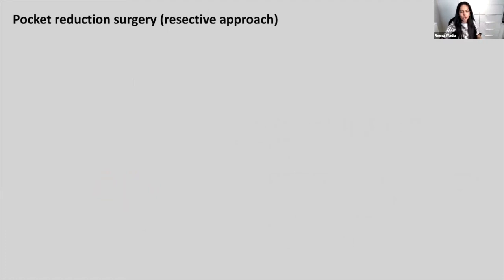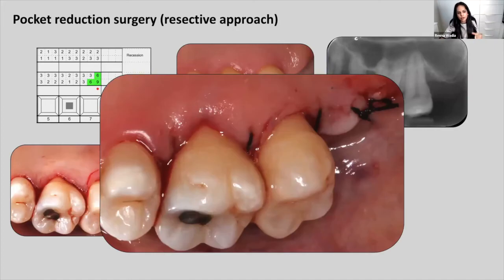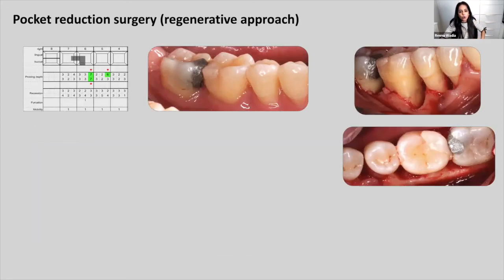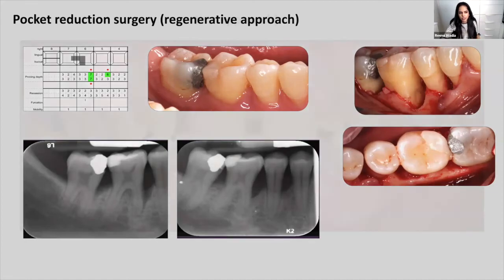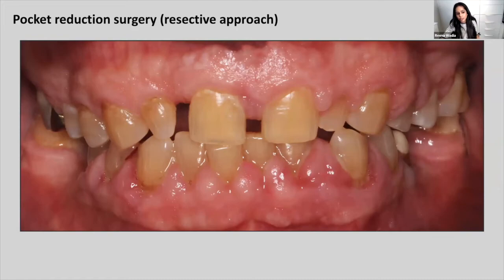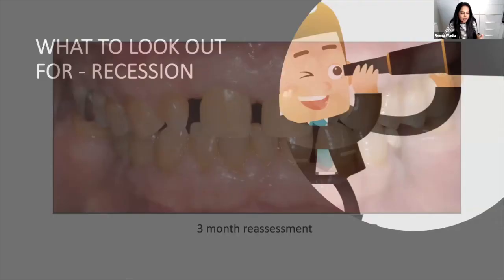For surgical management of pockets you can take either a resective or regenerative approach. Resective involves cutting away the pocket — for example, a distal wedge where you cut away the bulky gum tissue and stitch back. You may also smooth the bone. Regenerative surgery involves lifting a flap, identifying a bony defect, and filling it with bone graft material. It's optimal to try and regenerate rather than resect. For gingival overgrowth, get the inflammation down first, then do surgery to remove all the bulbous areas.